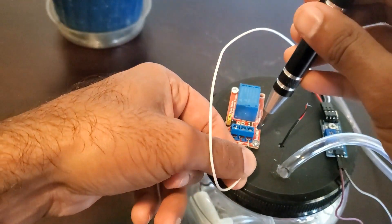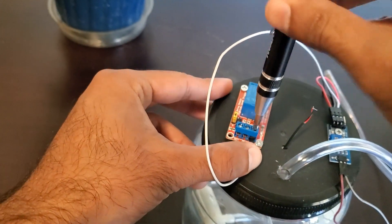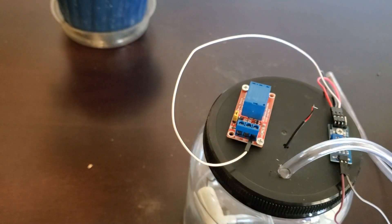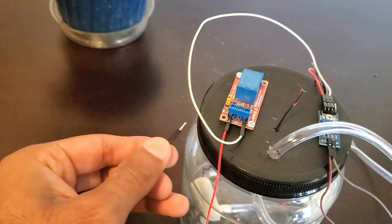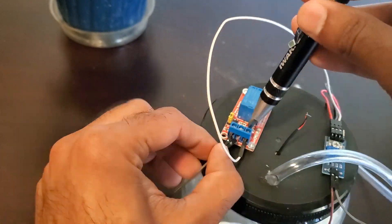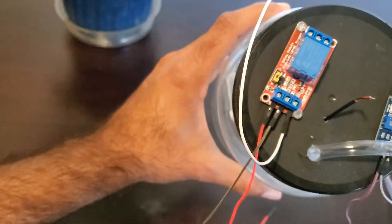Wire the white wire coming from the digital output of the soil sensor to the input of the relay module. Then add a red jumper wire to the positive and a black jumper wire to the negative of the relay module.